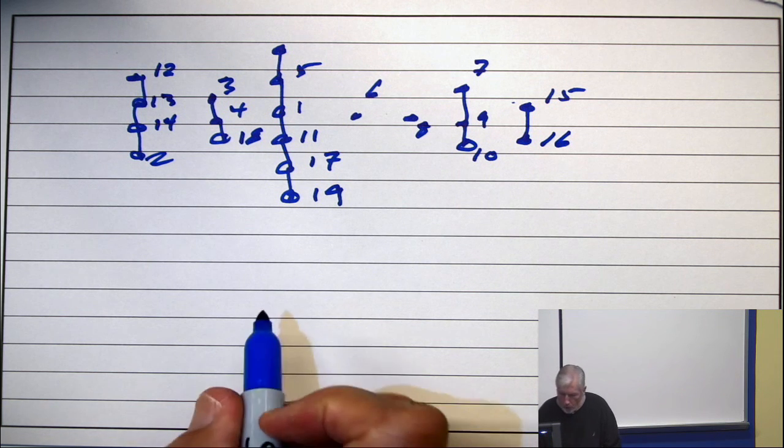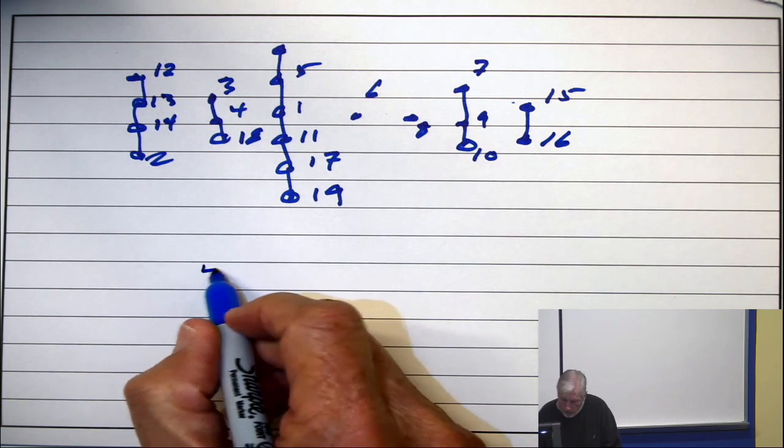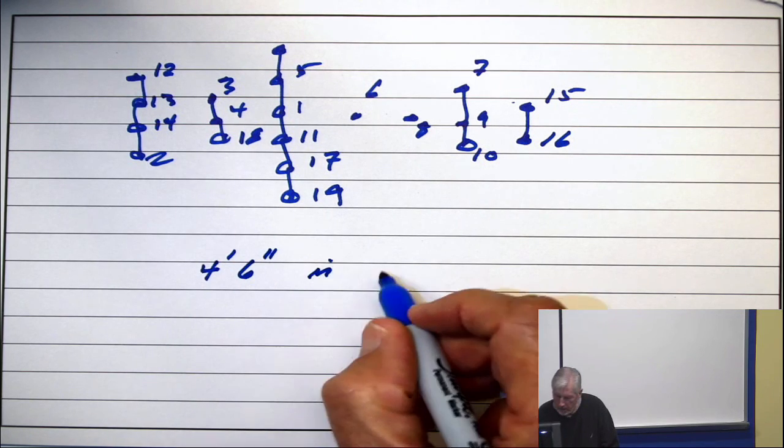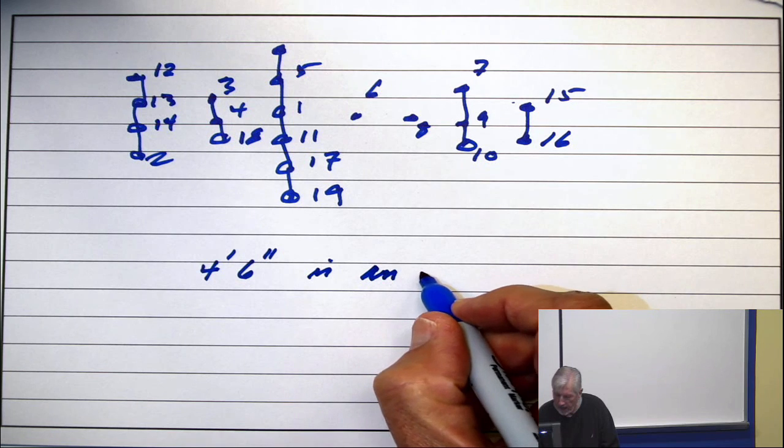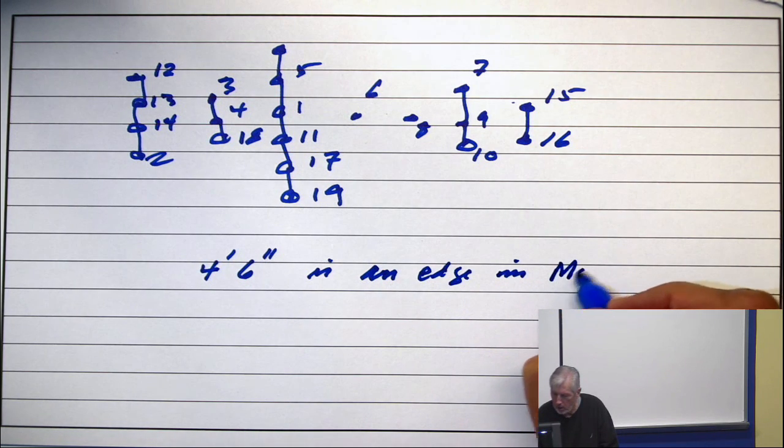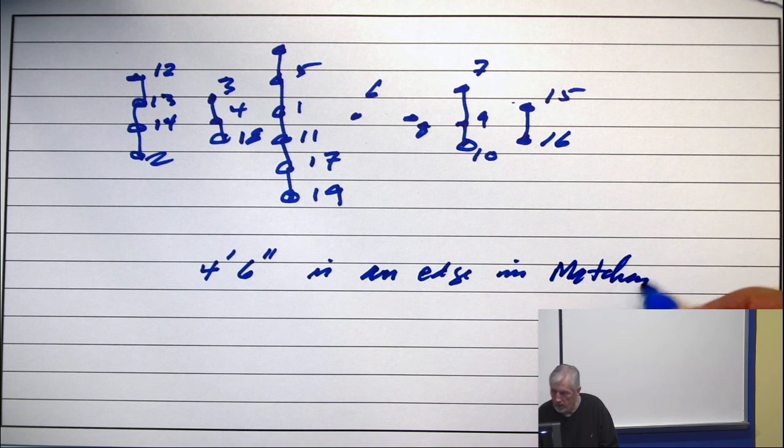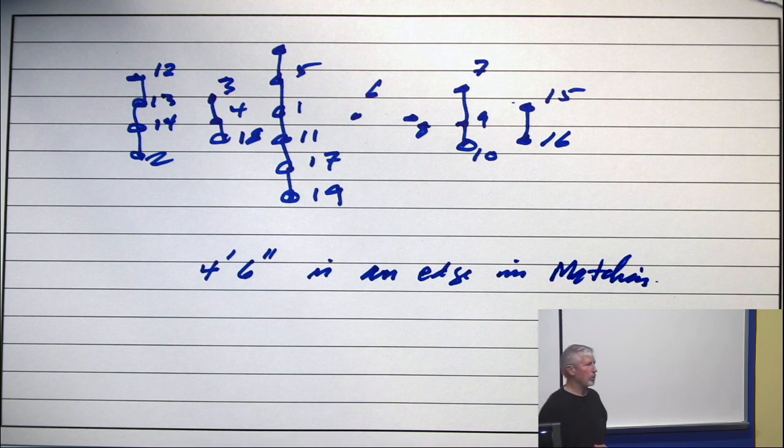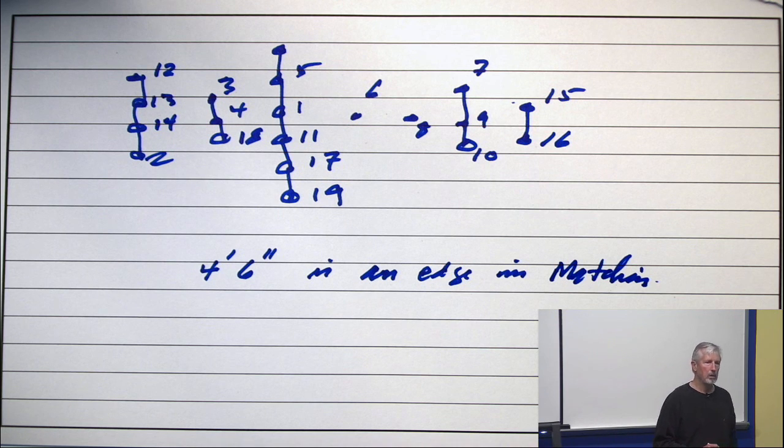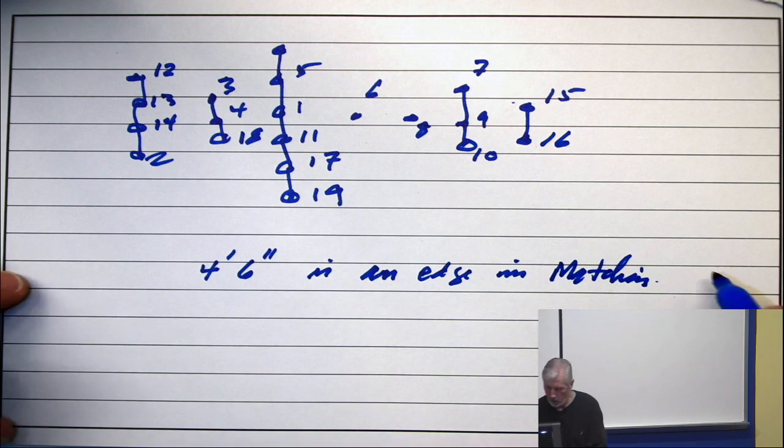So, true or false, 4 prime, 6 double prime is an edge in the match chain? Yes or no? You're supposed to say no. Answer, no.